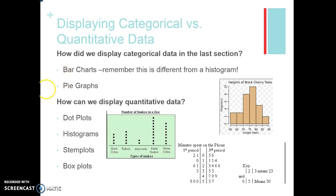In this section we're going to say how can we display quantitative data. One of the major ways that we have displayed in statistics is through a dot plot. Notice with the dot plot the types of snakes and this is a count. There are four types of black cobras, five types of pythons, two anacondas, a bunch of rattlesnakes. It gives a count within each category.